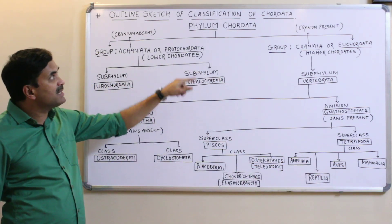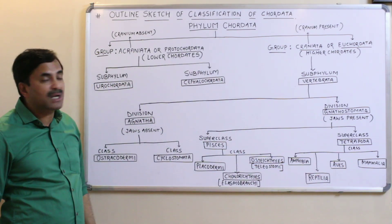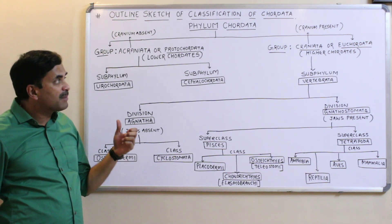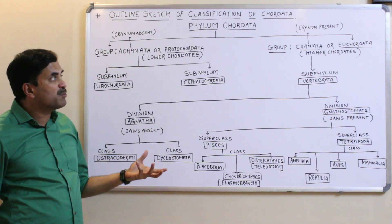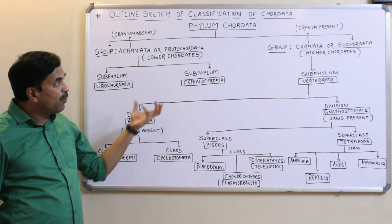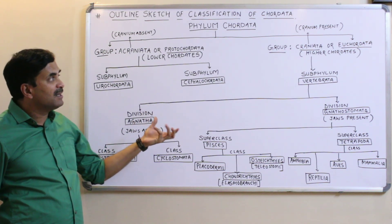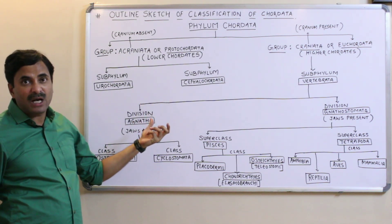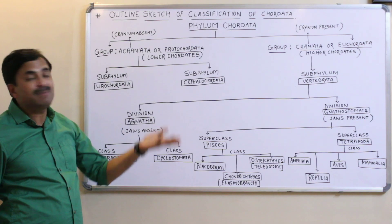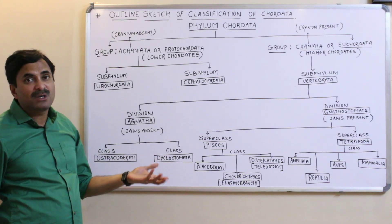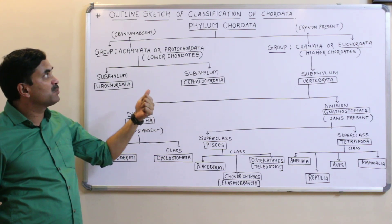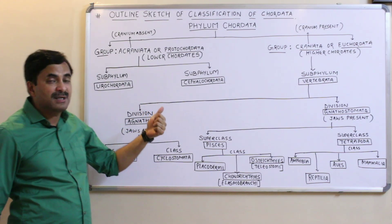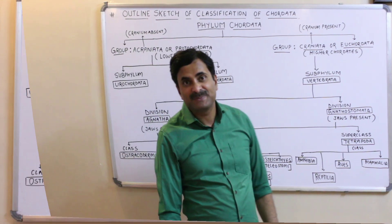This was the outline sketch of the classification of the chordates. It will become easier when you study all these in detail. First, you must know the outline chart of what you will be studying later on. That is why I have given you this chart, which is very important. Thanks a lot for watching.